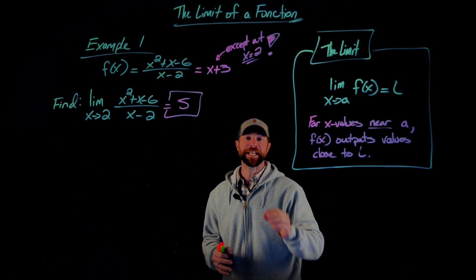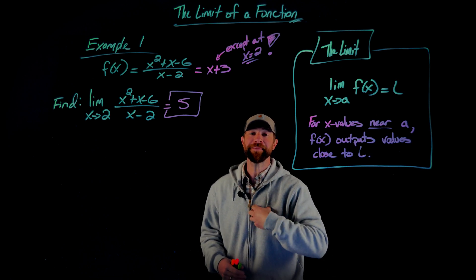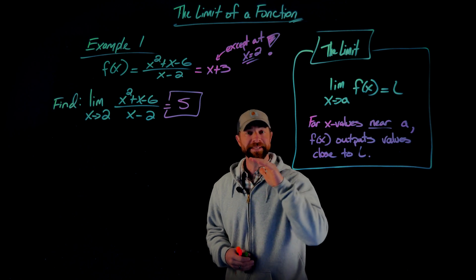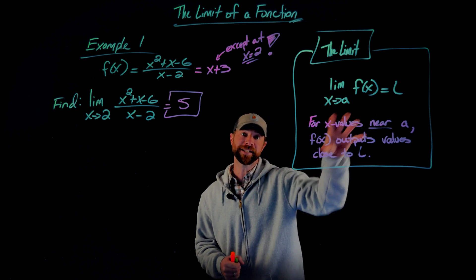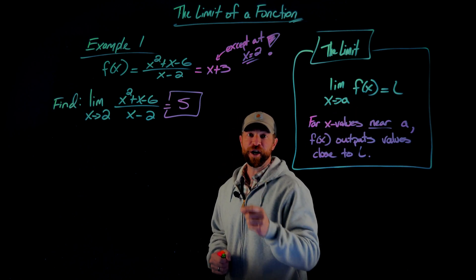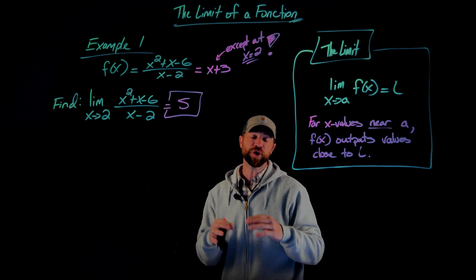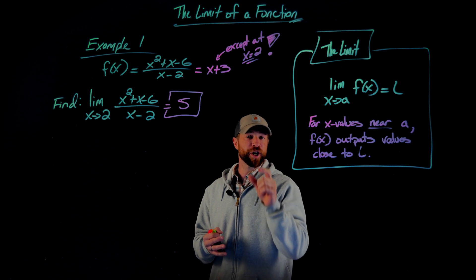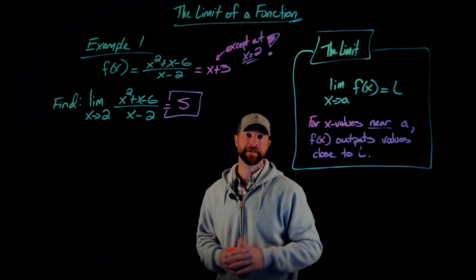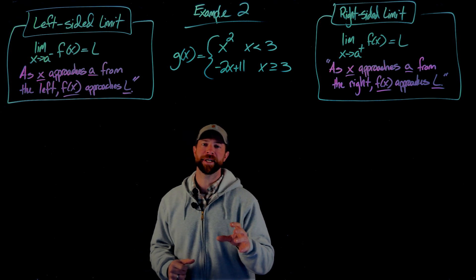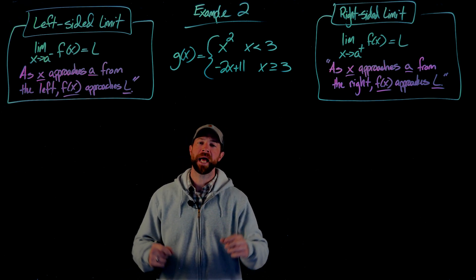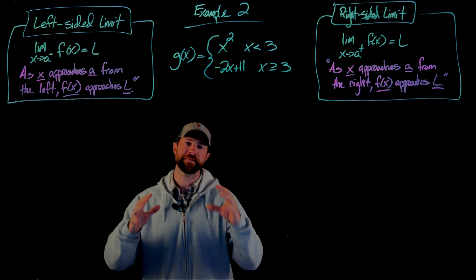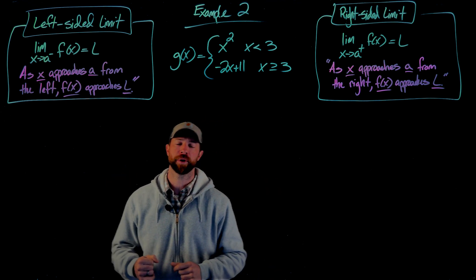It's really important to clarify: I am not saying this function equals 5 at x equals 2. What I am stating, according to the concept of limit, is that as x values get closer and closer to 2, the outputs of this function get closer and closer to 5. In the second example, we'll introduce one-sided limit notation and emphasize approaching a value from both sides.